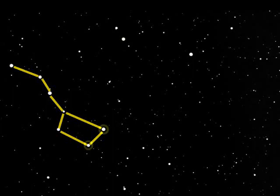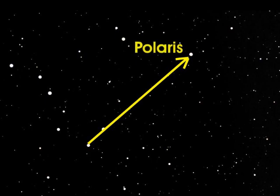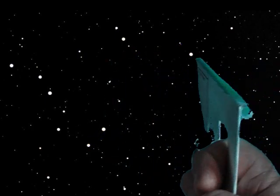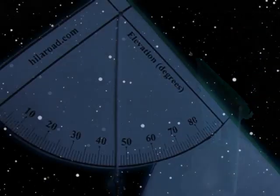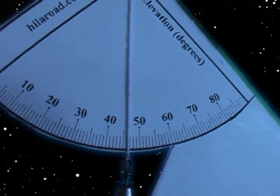Extend a line from these two stars — they point at Polaris. Sight Polaris with your inclinometer. The angle indicated on the scale is your latitude. My latitude here is 46 degrees north.